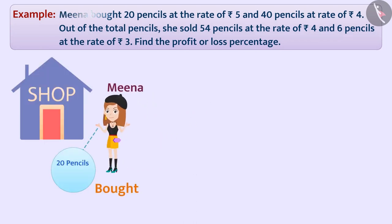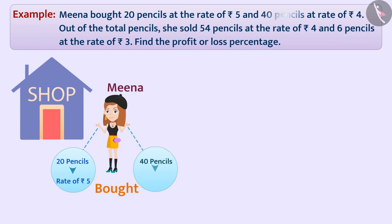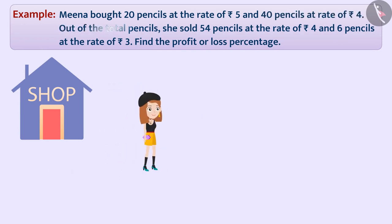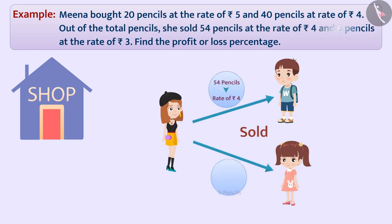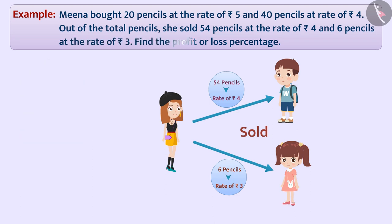Meena bought 20 pencils at the rate of 5 rupees and 40 pencils at the rate of 4 rupees. Out of the total pencils, she sold 54 pencils at the rate of 4 rupees and 6 pencils at the rate of 3 rupees. Find the profit or loss percentage.